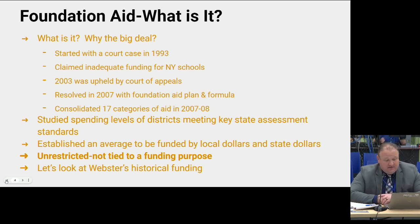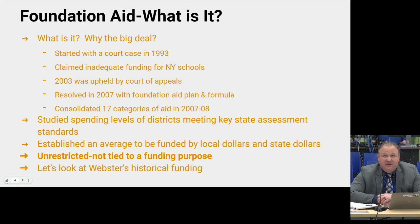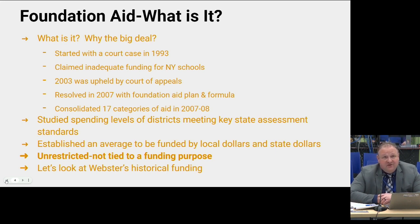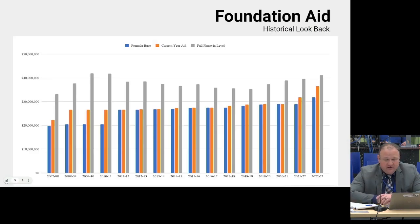A formula was designed that consolidated what were previously 17 categories of aid into one formula. They studied the spending levels of districts that were meeting key state assessment standards — essentially, what did a successful school spend to be successful? They established averages to be funded by local and state dollars, and the whole purpose was to consolidate those 17 categories into one unrestricted, not tied to anything, funding.